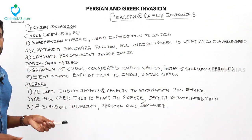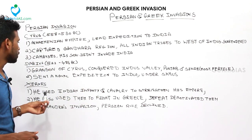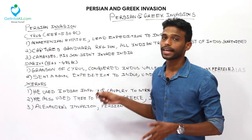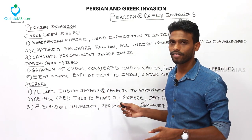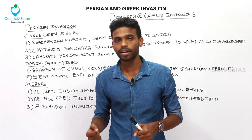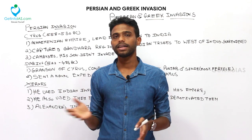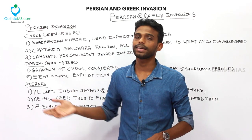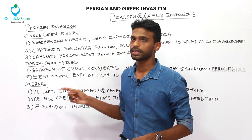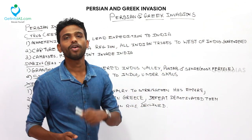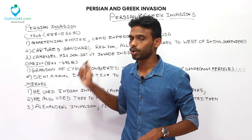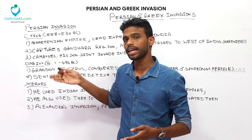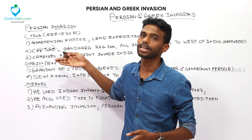Xerxes was the last Persian king to invade India. He used Indian infantry and cavalry to strengthen his empire, and also used them to fight against Greek kings. However, there was a defeat in Greece, which demotivated Xerxes and led to the loss of many lives — contributing to the decline of the Persian Empire. When Alexander subsequently invaded India, the Persian Empire automatically came to a decline.